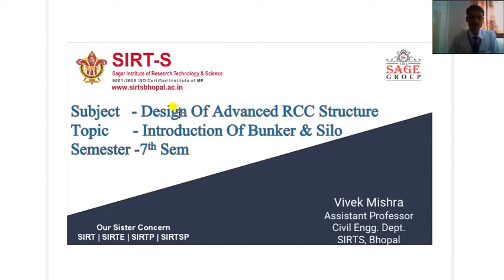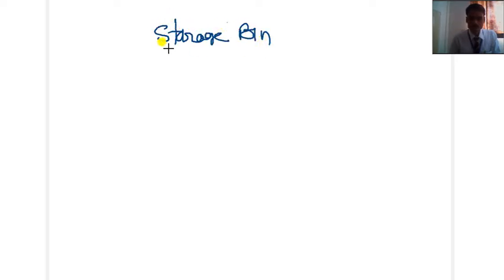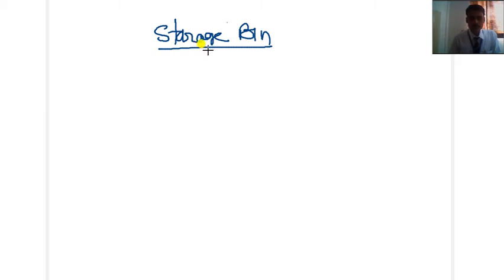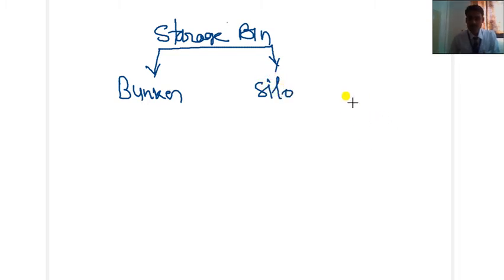Good morning dear students. In today's class we will discuss the basic introduction of bunker and silo. If we talk about storage structures at the site of construction or any other places, generally we use a storage bin for storing various types of ingredients or materials like grains, cement, and coal. Basically two types of storage bins are used: first is bunker and second is silo.